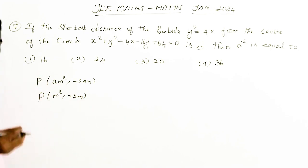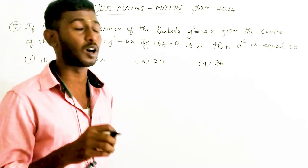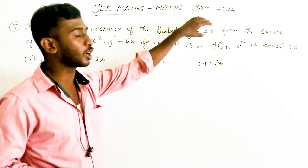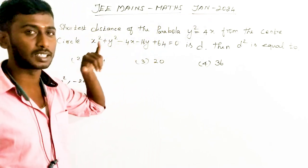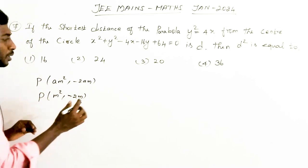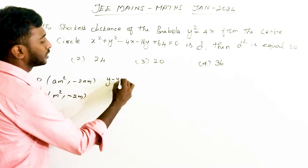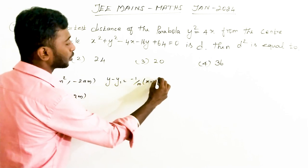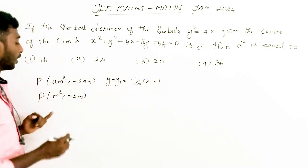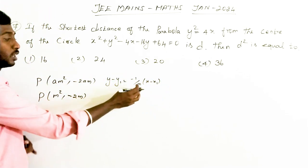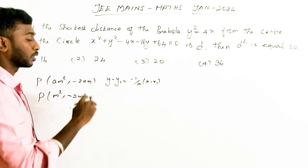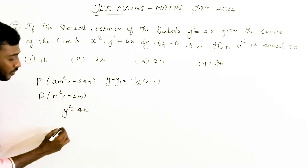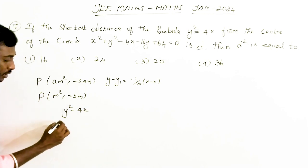Next, we are going to find the equation of the normal to the parabola. The equation of the normal passes through the center of the circle. The normal equation is: y - y₁ = (-1/m)(x - x₁), where x₁ and y₁ is the point on the parabola. We are going to find the slope — let us differentiate y² = 4x with respect to x.